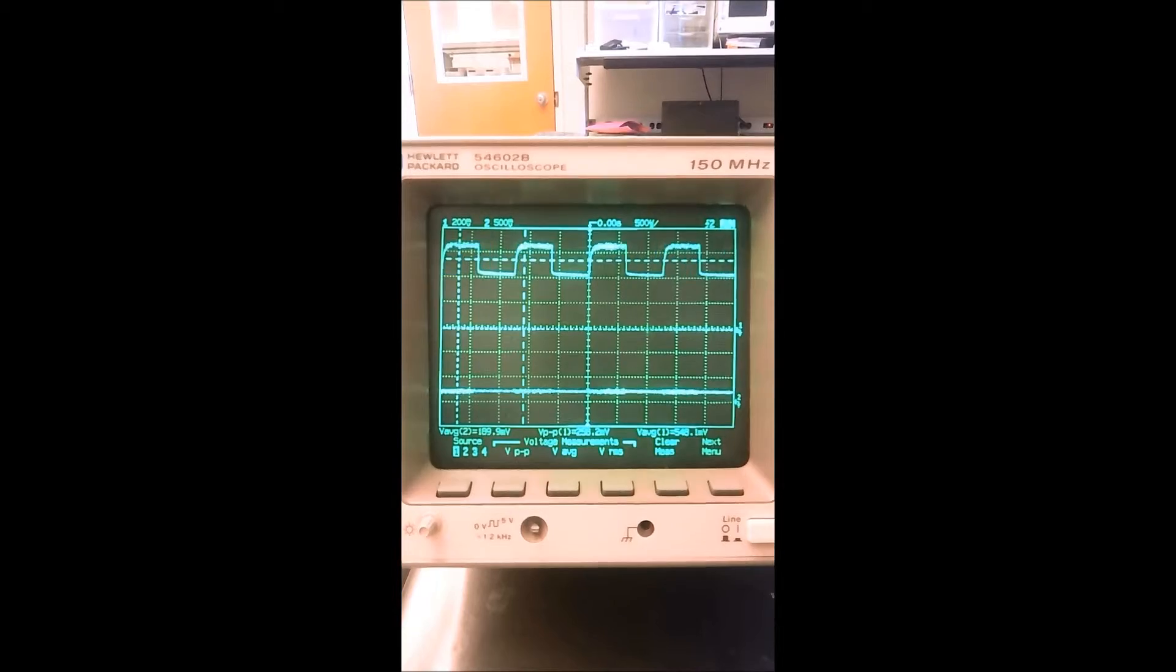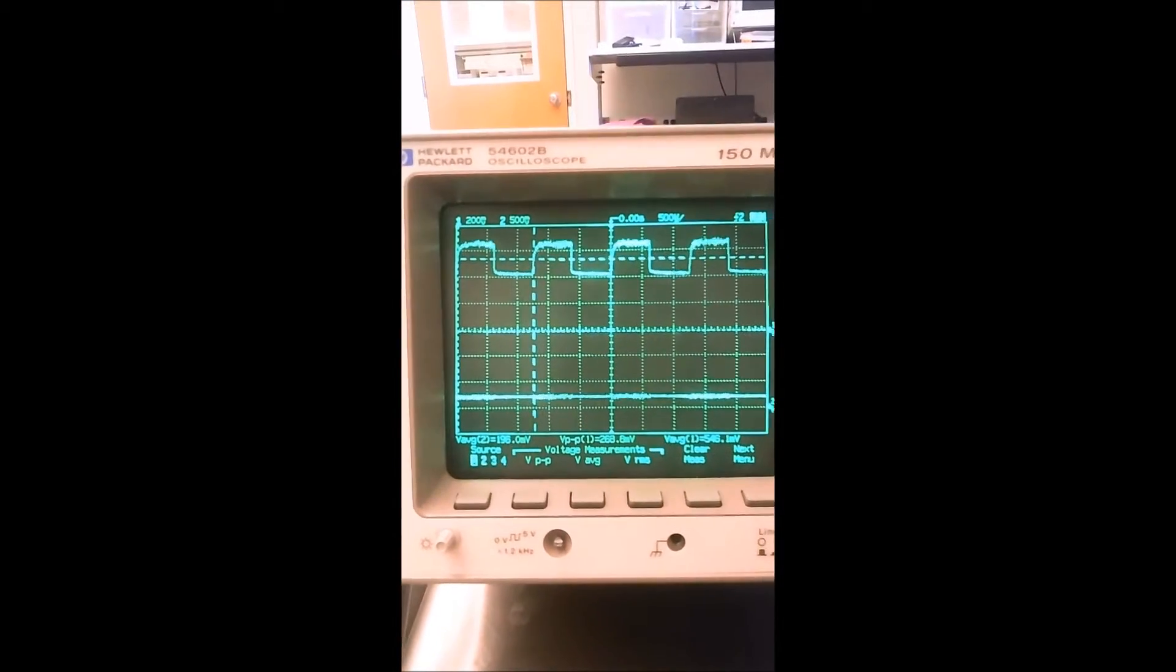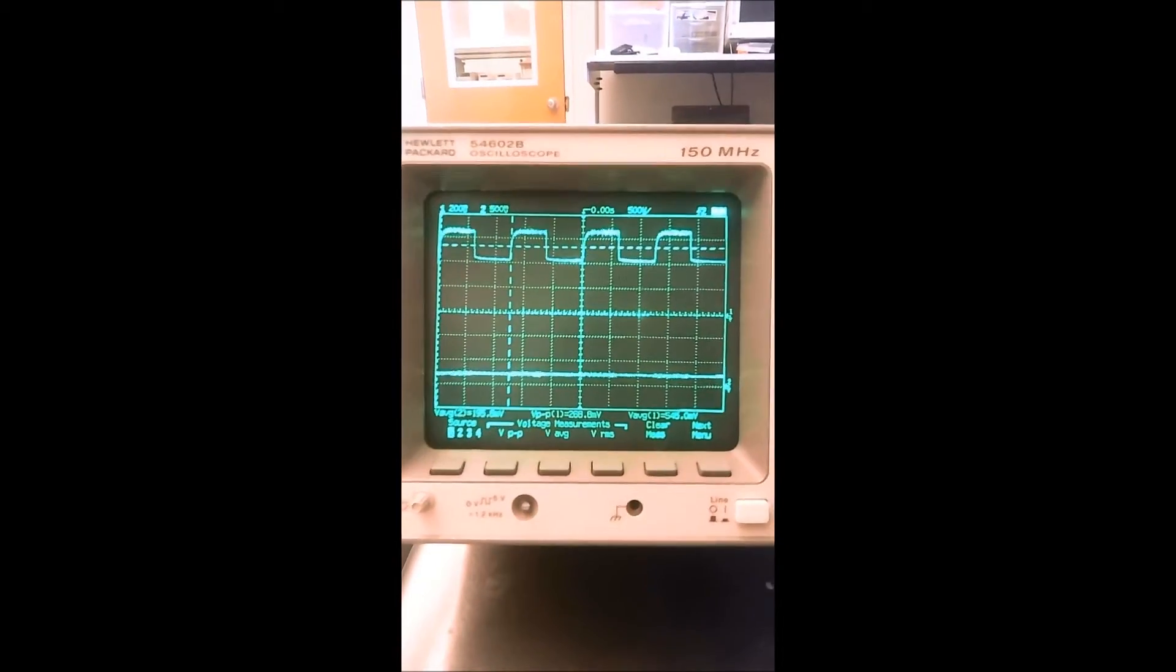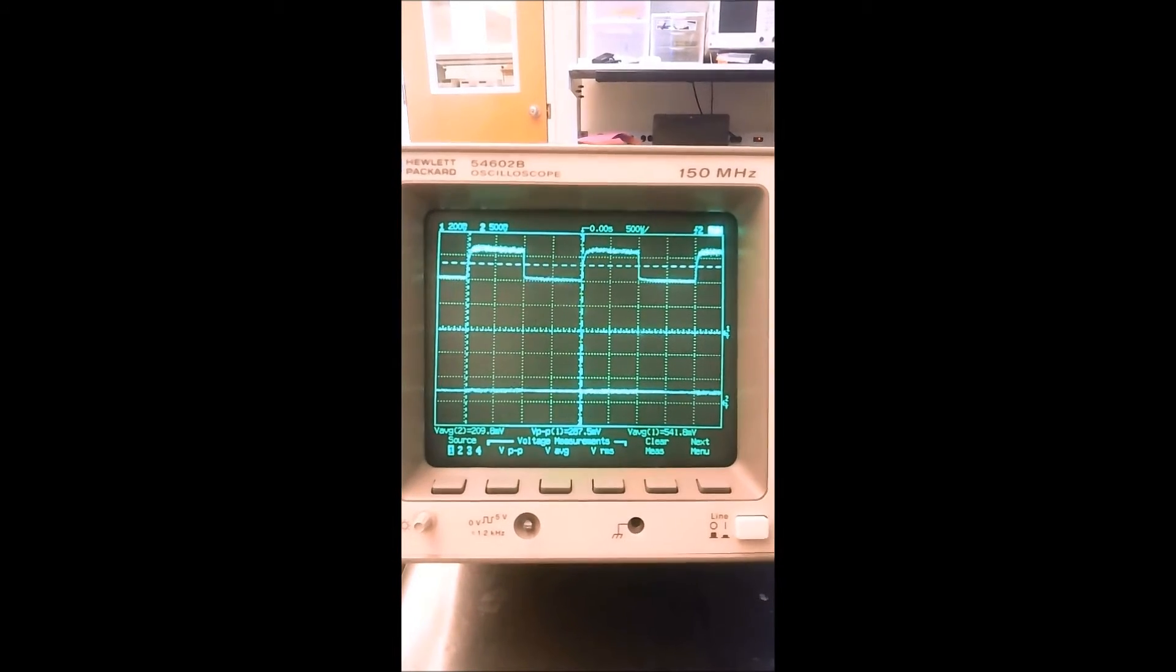Oh, 900. Yeah, once you pass 1k it doesn't change the DC too much, within maybe 5%.